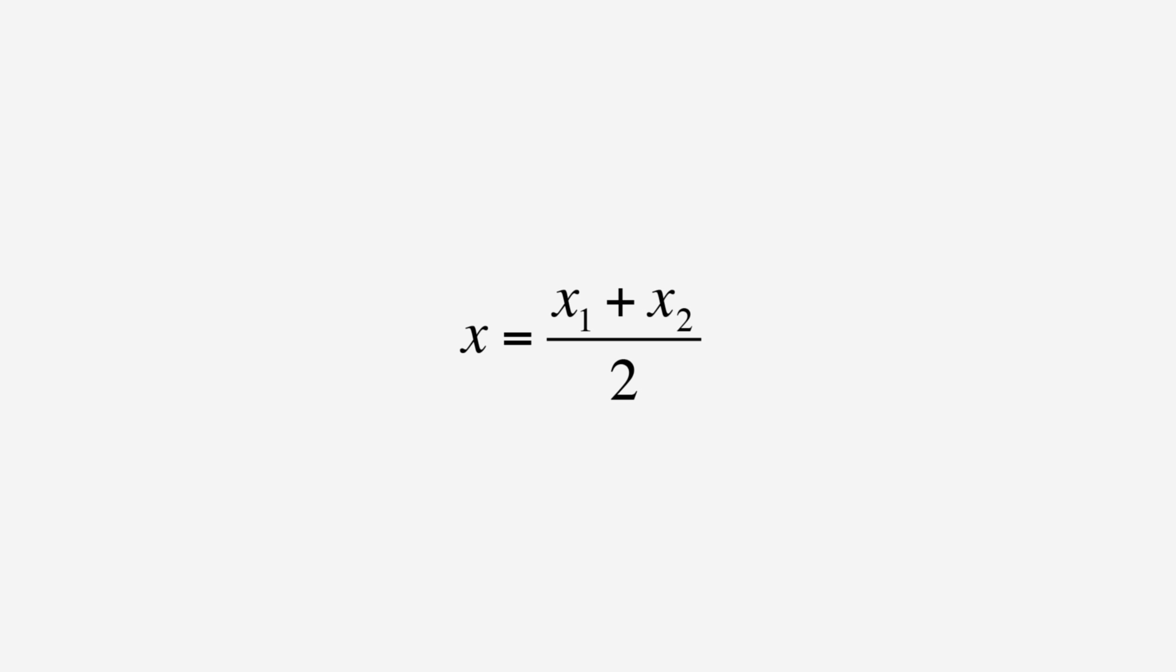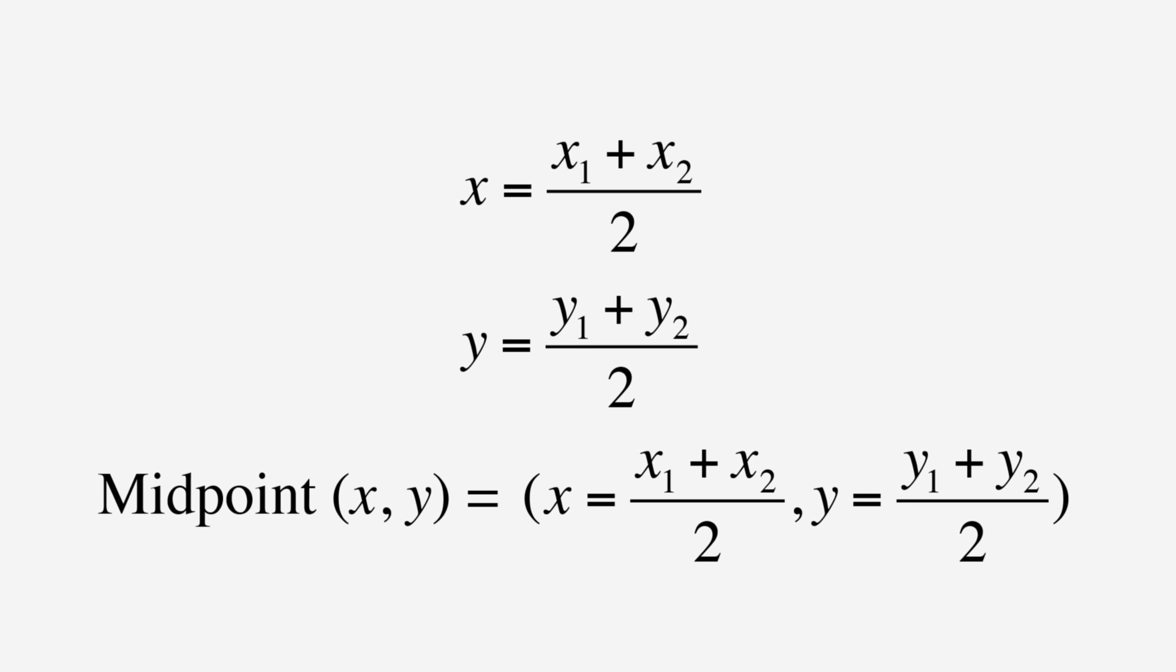To find the x-coordinate of the midpoint, just average the two points x-coordinates by adding x1 and x2 and dividing them by two. Then find the y-coordinate of the midpoint by doing the same thing. Add y1 plus y2 and divide it by two. So, the midpoint is equal to the point x1 plus x2 over two, y1 plus y2 over two.